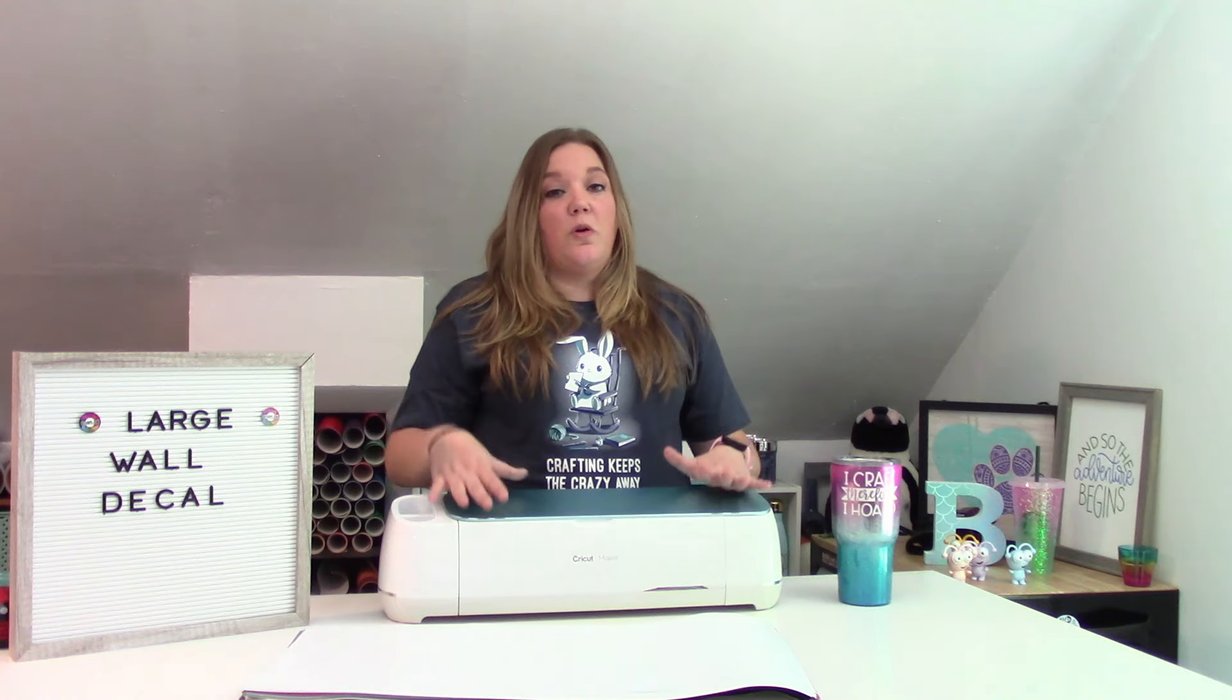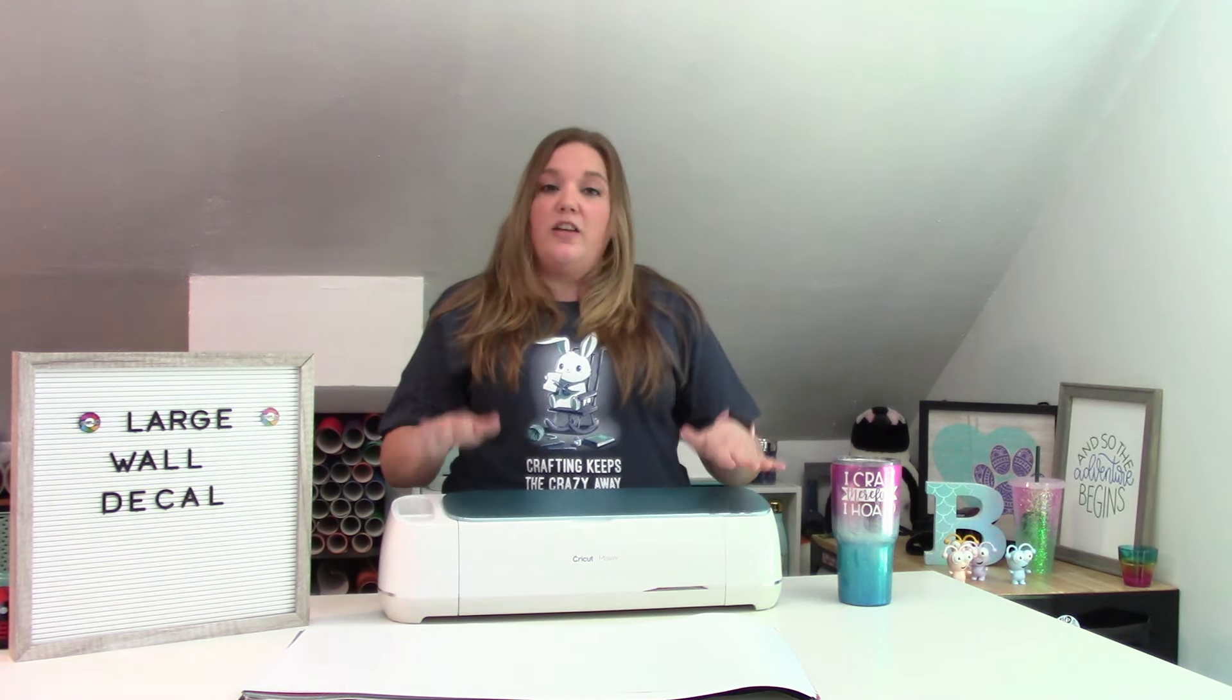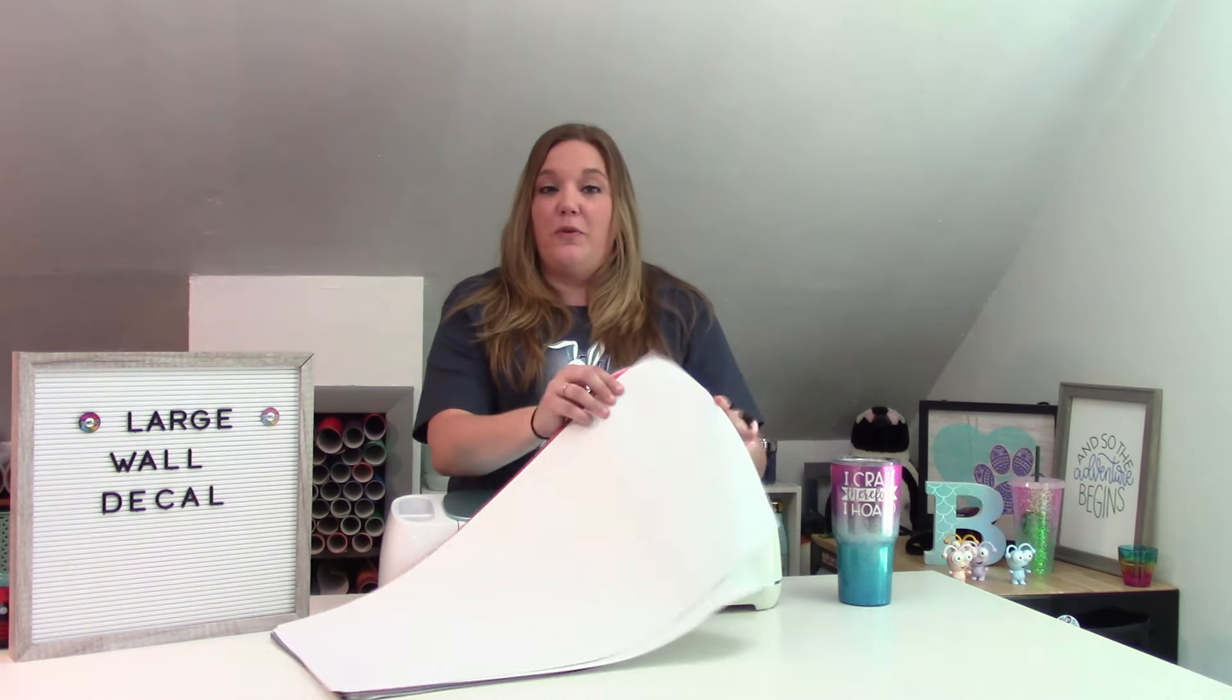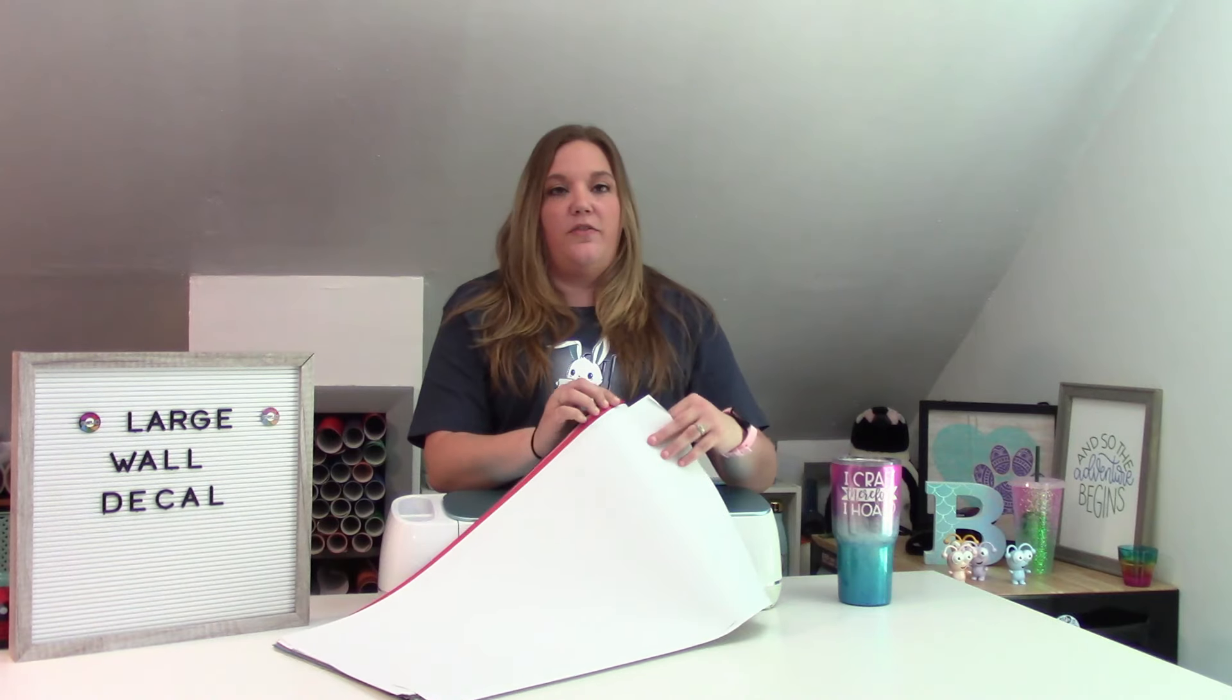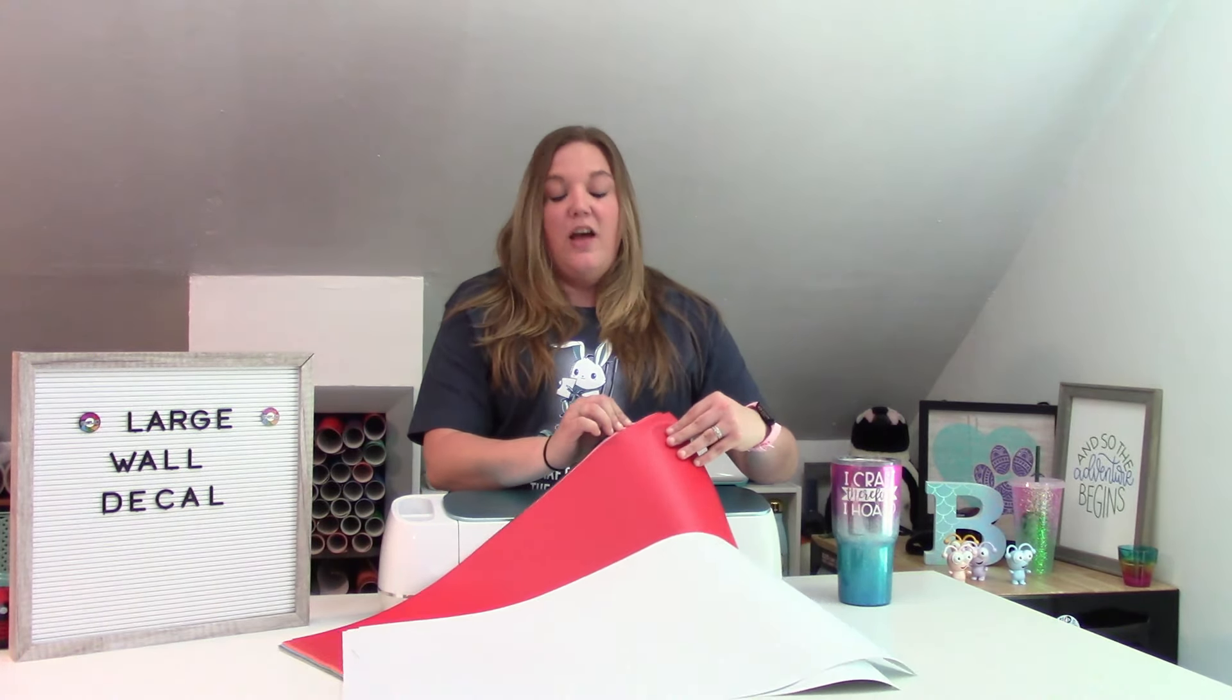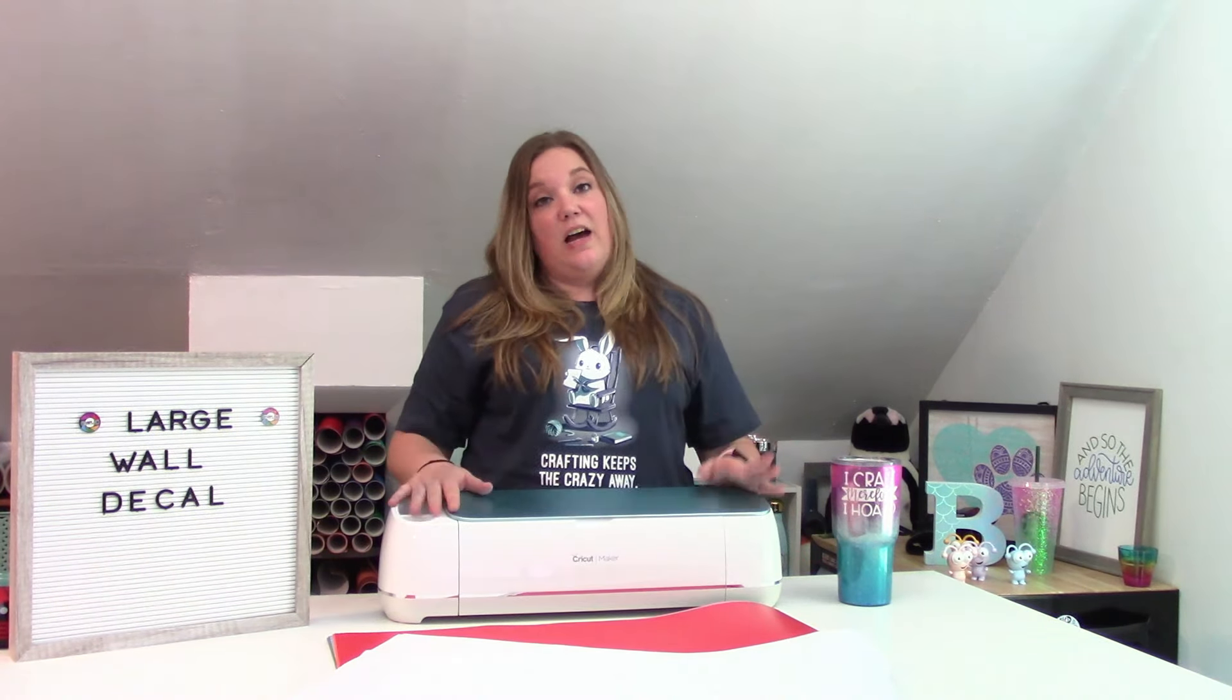All you'll need is some sort of craft cutting machine, whether it be a Cricut or a silhouette, and then you'll need some removable vinyl. I used Oracle 631, which comes in a ton of great colors and they're matte, so it's really easy to use. These are a lot of fun to work with and we are going to make a really cute trendy decal.